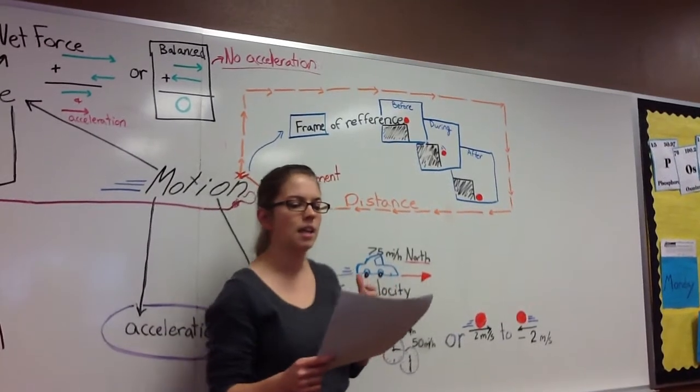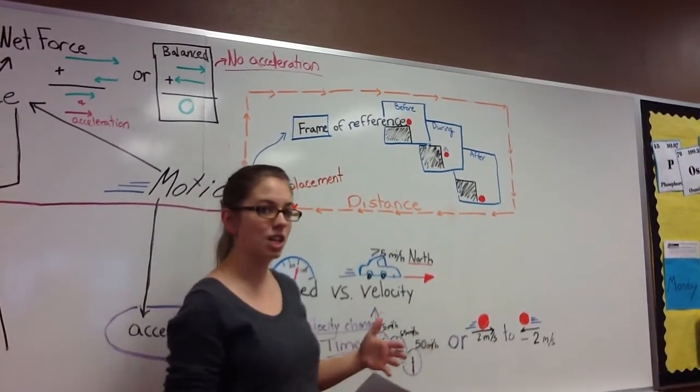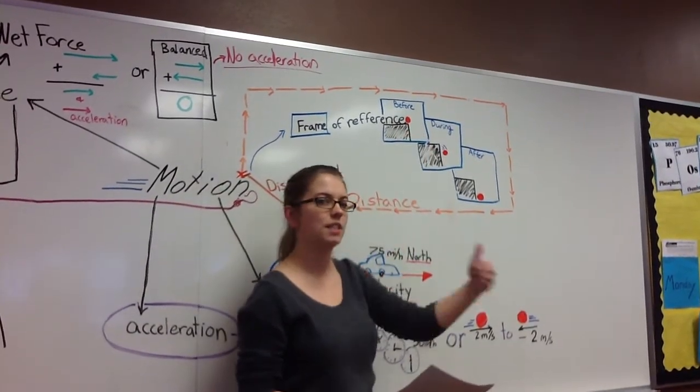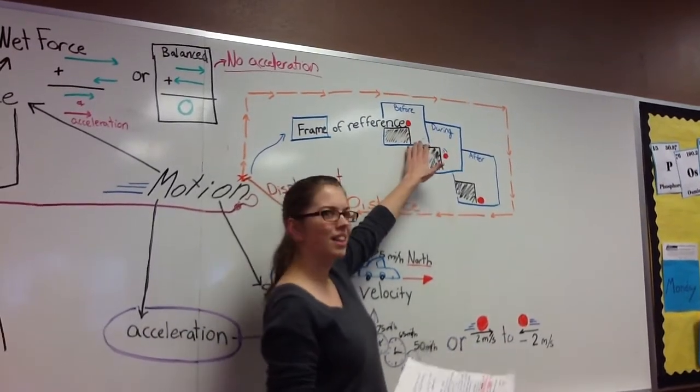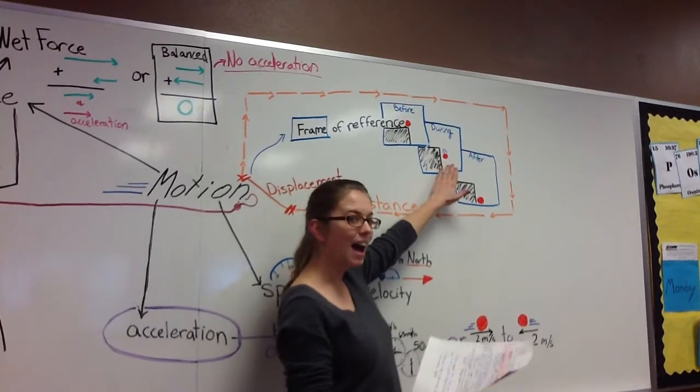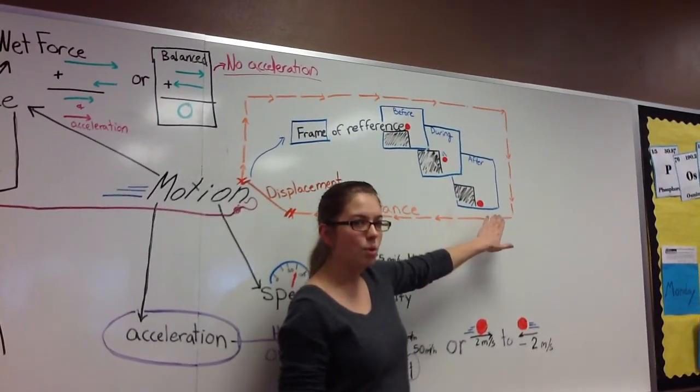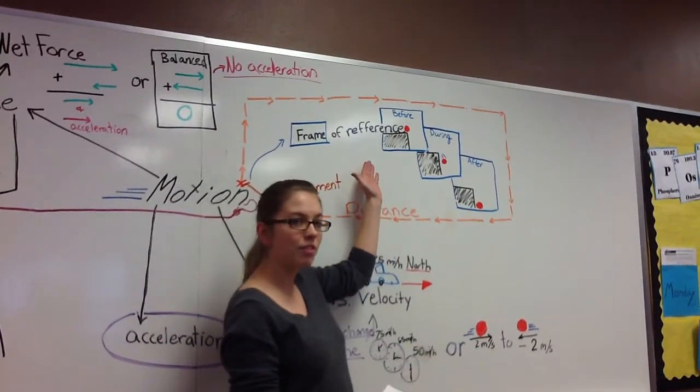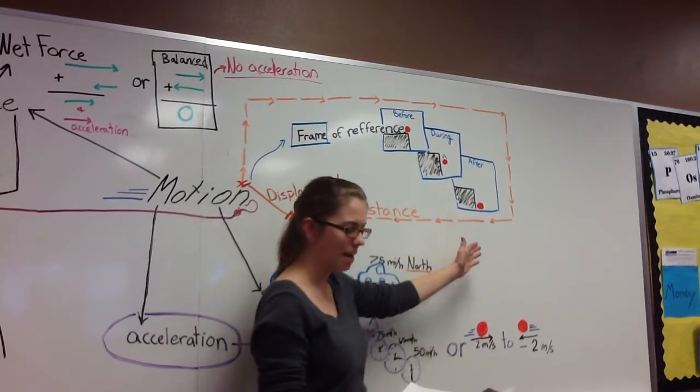A frame of reference is our way of specifying an object's precise location. Here's an example. If I have a ball rolling off of the edge of a table, I first, before it ever starts, I see that the ball is on the table. I see that the ball is then beside the table, and finally I see that the ball has hit the floor. We're able to tell that the ball was moving because of our frame of reference, the table, told us that the ball was moving relative to the table.